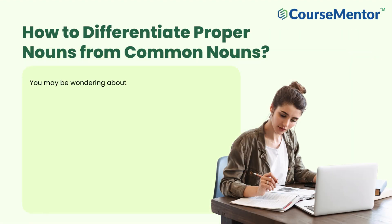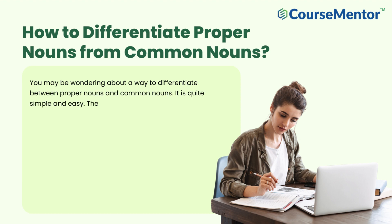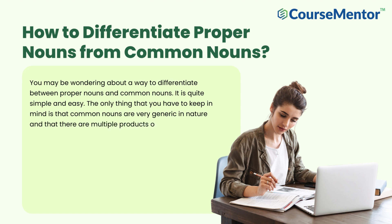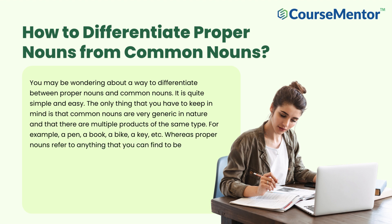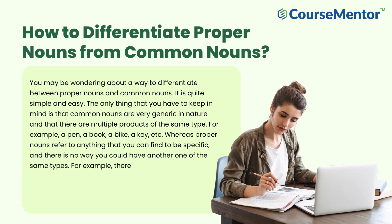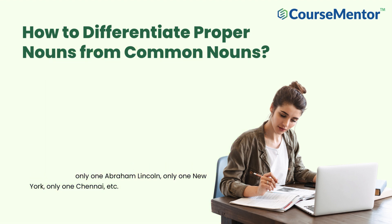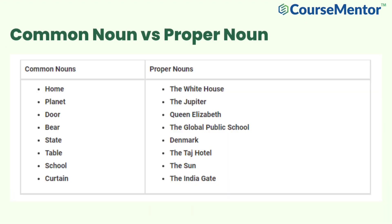How to differentiate proper nouns from common nouns. Common nouns are very generic in nature and there are multiple items of the same type — for example, a pen, a book, a bike, a key, etc. Whereas proper nouns refer to anything that is specific, and there is no way you could have another one of the same type. For example, there is only one William Shakespeare, only one Abraham Lincoln, only one New York, only one Chennai. Here is a table that shows common noun versus proper noun.